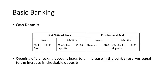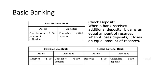After this, directly, this cash should be transferred to become reserves — we move it to another account called reserves. When a bank receives an additional deposit, it gains an equal amount of reserves. When it loses a deposit, it loses an equal amount of reserves.